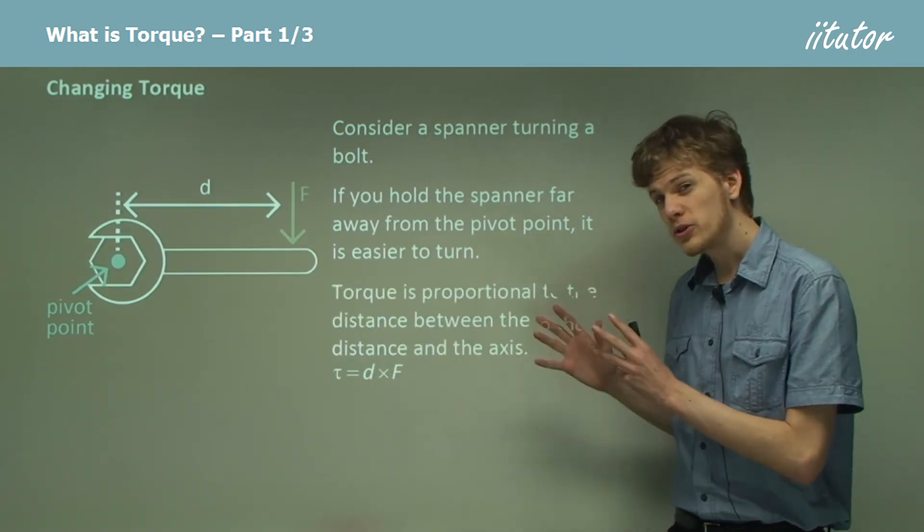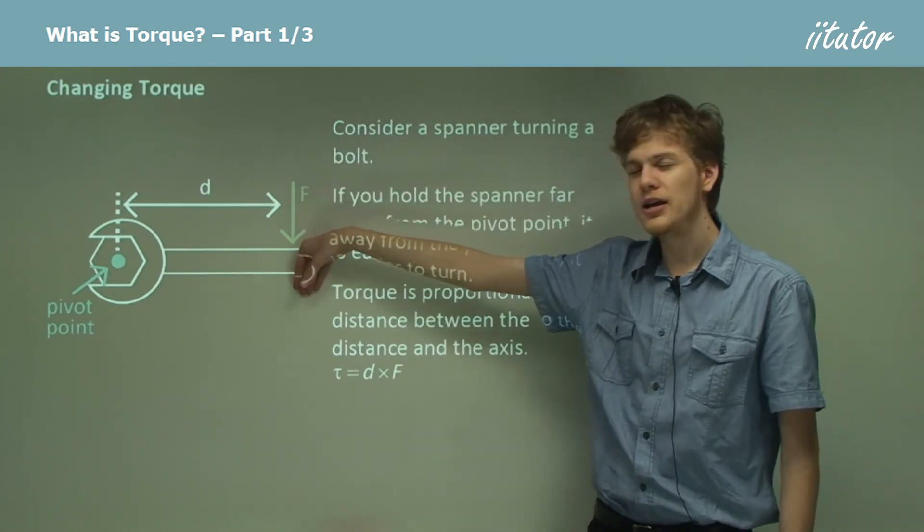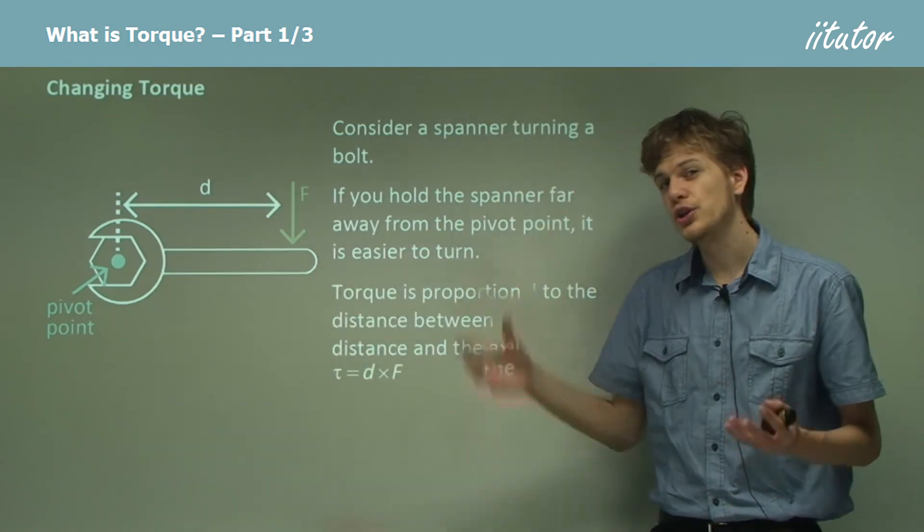So torque is proportional to the distance between the point of application of the force and the pivot point that the object is turning around.